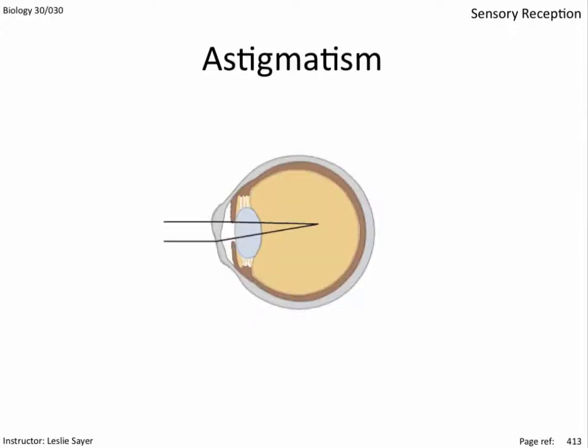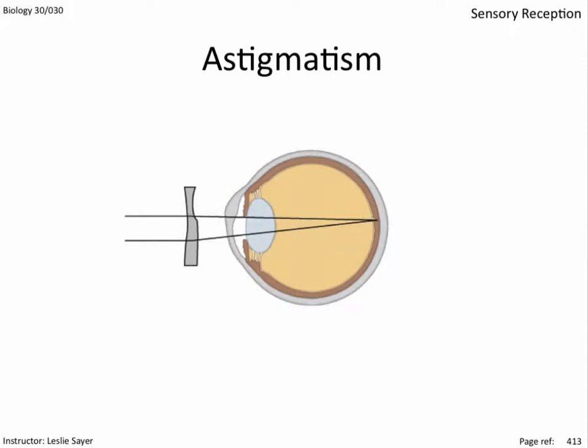Astigmatism is an inherited condition where there is an uneven curvature of part of the cornea. This prevents proper focusing of the image on the retina. Special corrective lenses can correct this problem.